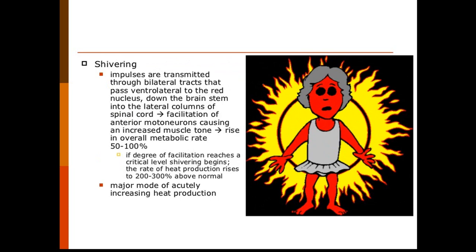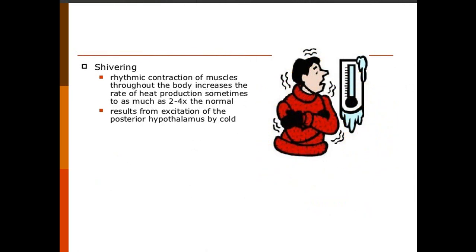Shivering involves continuous contraction of muscles, increasing muscle tone. These muscle contractions occur when anterior motor neurons are stimulated, leading to muscle contraction and production of heat. Shivering involves rhythmic contractions and can increase the basal metabolic rate two to four times. It results from excitation of the posterior hypothalamus by cold.